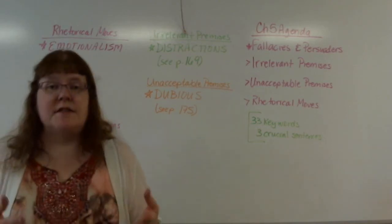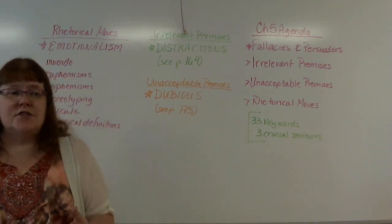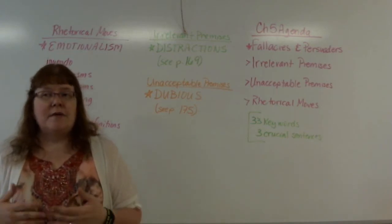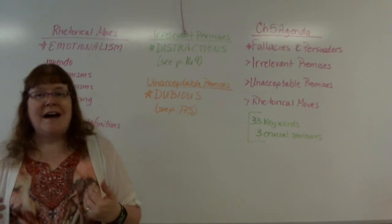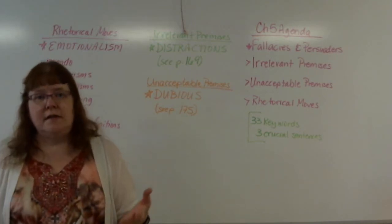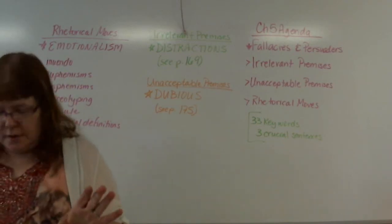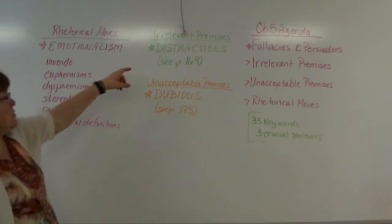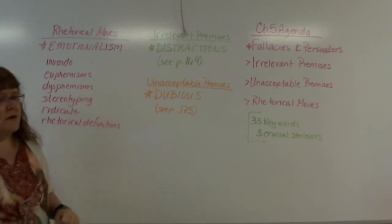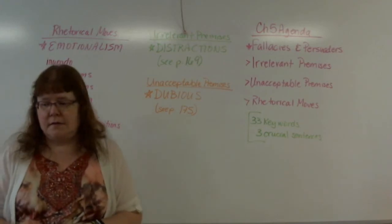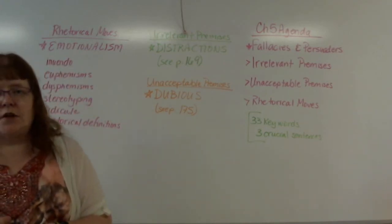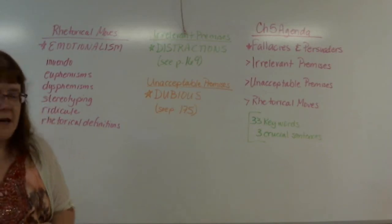The last one is a faulty analogy. An analogy is just a comparison between two things that are similar. Well, maybe those two things are similar but not in ways that matter for this particular argument — we call that a faulty analogy. There are lots more, so look at pages 169 and 175 for the quick definitions. Dr. Vaughn goes into detail about all of these and gives some really good examples. The examples are going to be important for the test.